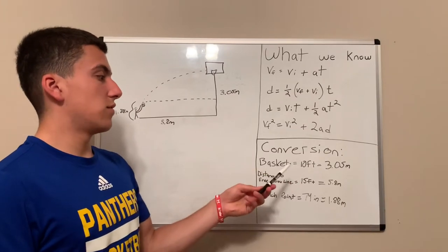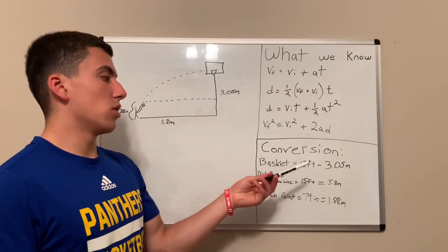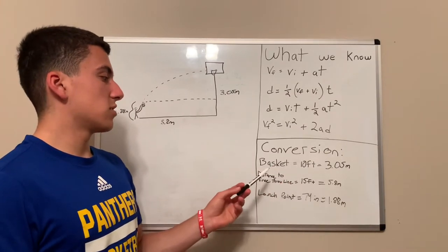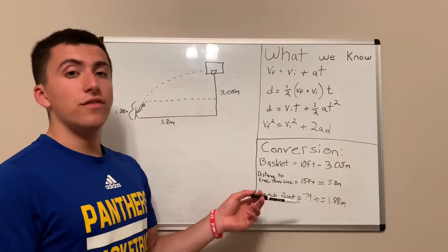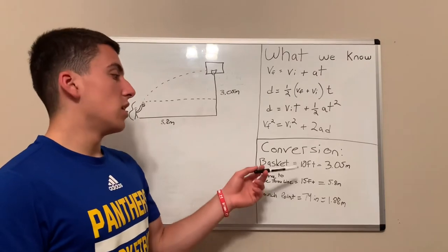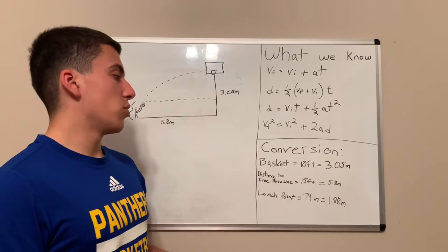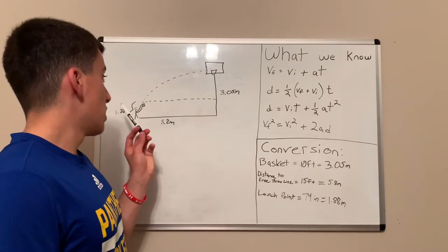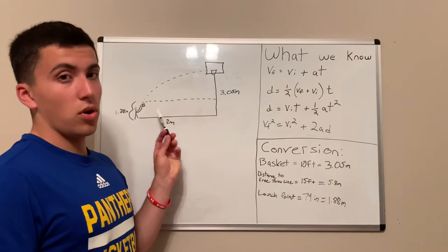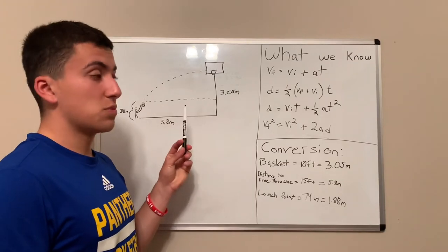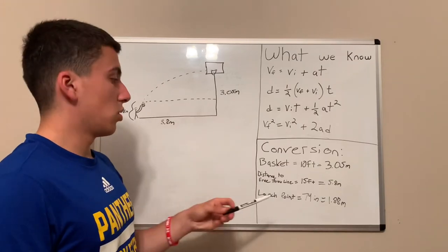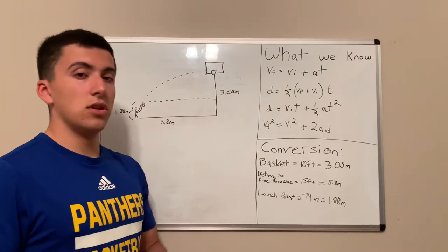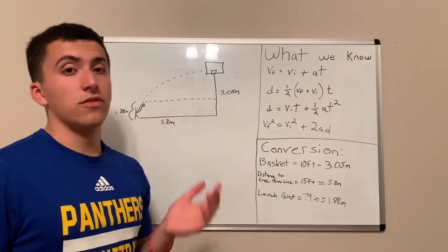The basket at 10 feet equals 3.05 meters, the distance to the free throw line at 15 feet equals 5.8 meters, and the launch point — the release point where I shot the ball — 74 inches equals 1.88 meters.